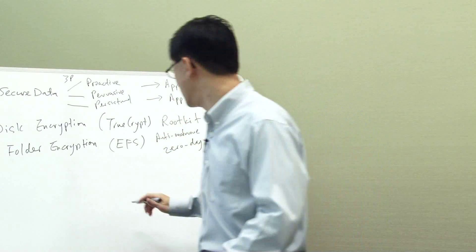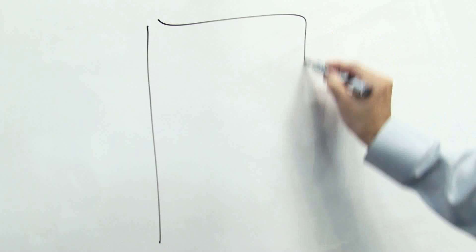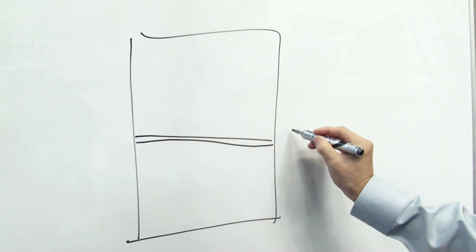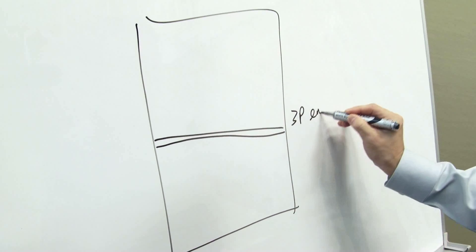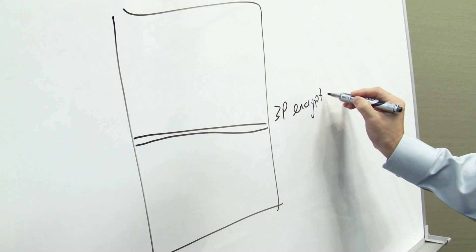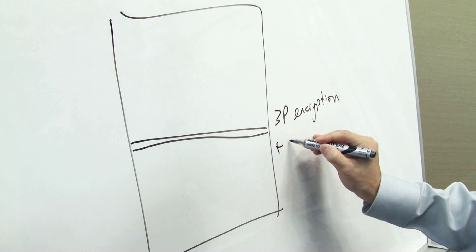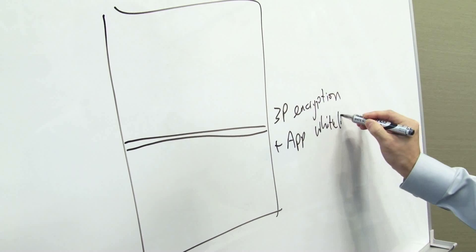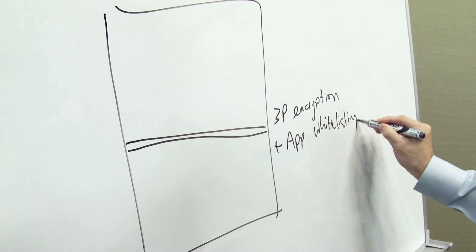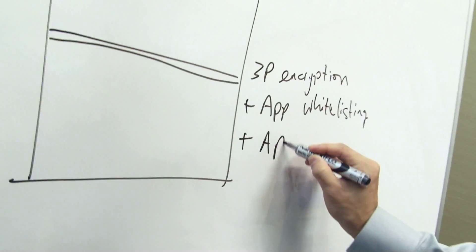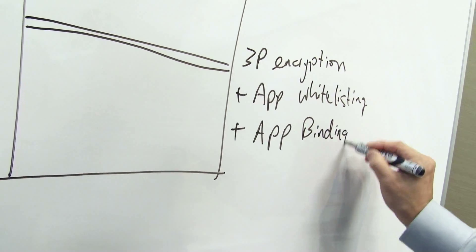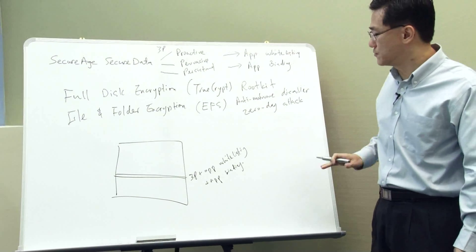So what does Secure Data do? Secure Data essentially creates a layer in the entire system that takes the 3P encryption plus adds whitelisting plus adds binding into one single layer we call integrated defense.